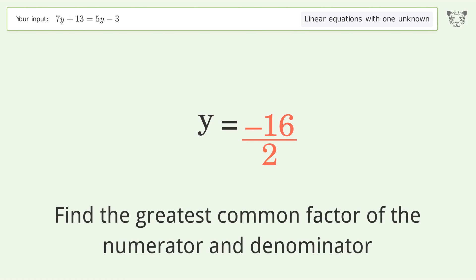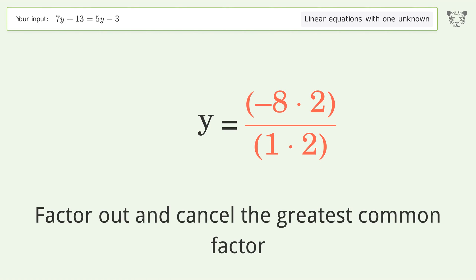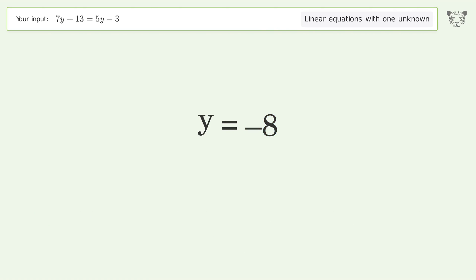Find the greatest common factor of the numerator and denominator. Factor out and cancel the greatest common factor. And so the final result is y equals negative 8.